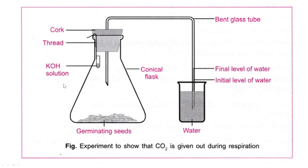We have a simple experimental setup. We have a conical flask containing germinating seeds. Inside there is a small glass tube with a freshly prepared potassium hydroxide solution. The conical flask has both the germinating seeds and potassium hydroxide inside. There is a rubber cork sealing the flask so that gas cannot come from outside and gas cannot go outside — it is a sealed system. This is the experimental setup.